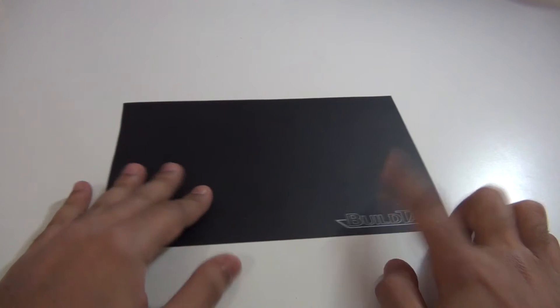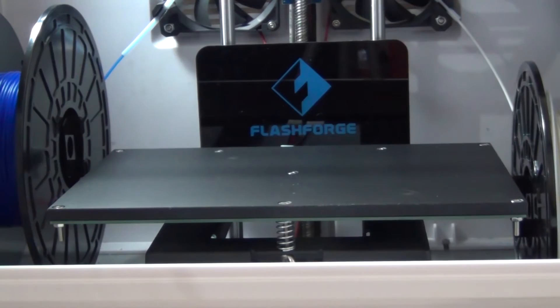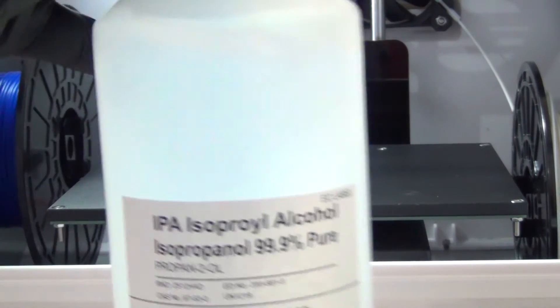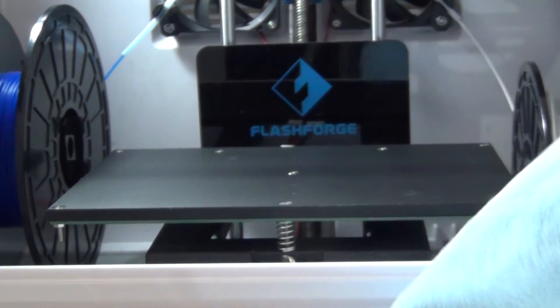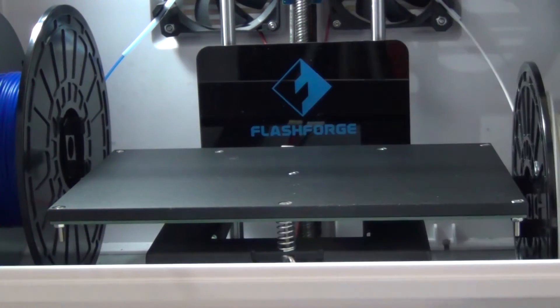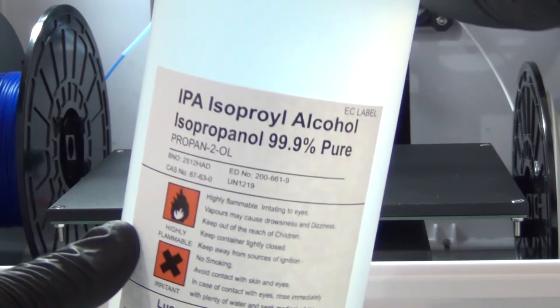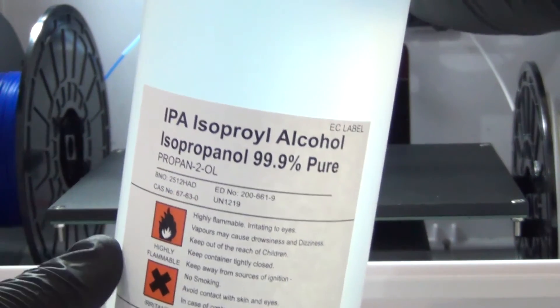So the next step is to just get some isopropyl alcohol and a microfiber cloth. What you want to do is you want to just clean the print surface. Now as you can see I'm wearing some gloves, that's just because this stuff is pretty harmful so you do not want to get this stuff on your hands at all.